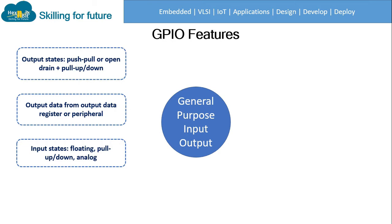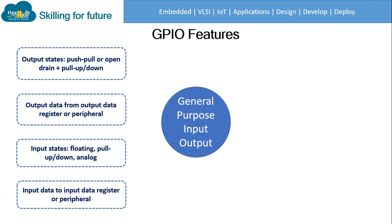Input state can be floating, pull-up, pull-down, or analog. If we configure a pin as an input then it can be in the floating state, meaning there will be no particular defined state. Pull-up pull-down means we can set the logic high or low for the default state. The third option is analog, meaning we can read the value from this pin. Input data goes to the input data register or peripheral.